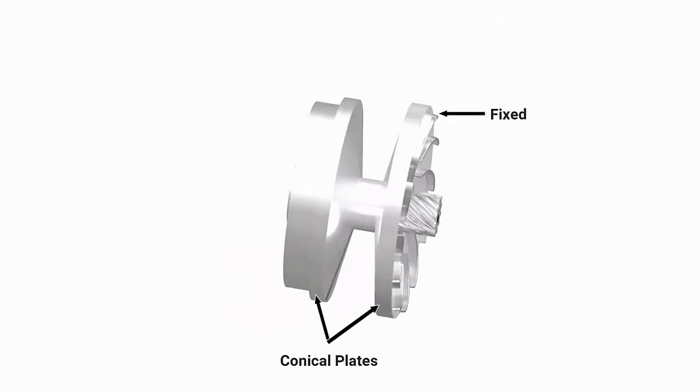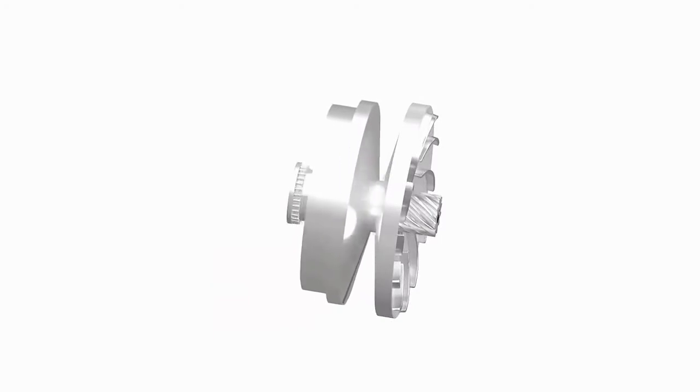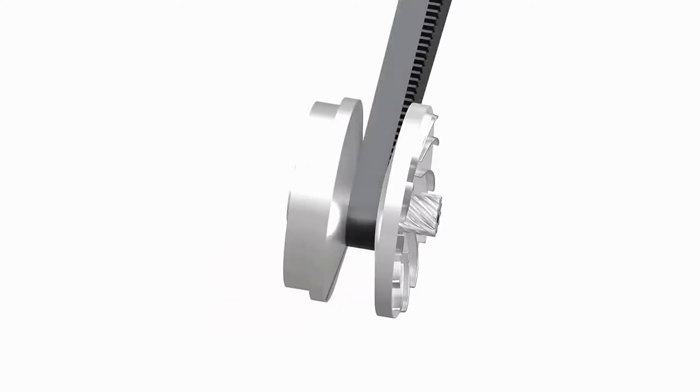One of them is fixed to the rear of the shaft, and the other is free to slide along its axis. A V-belt runs between these plates.